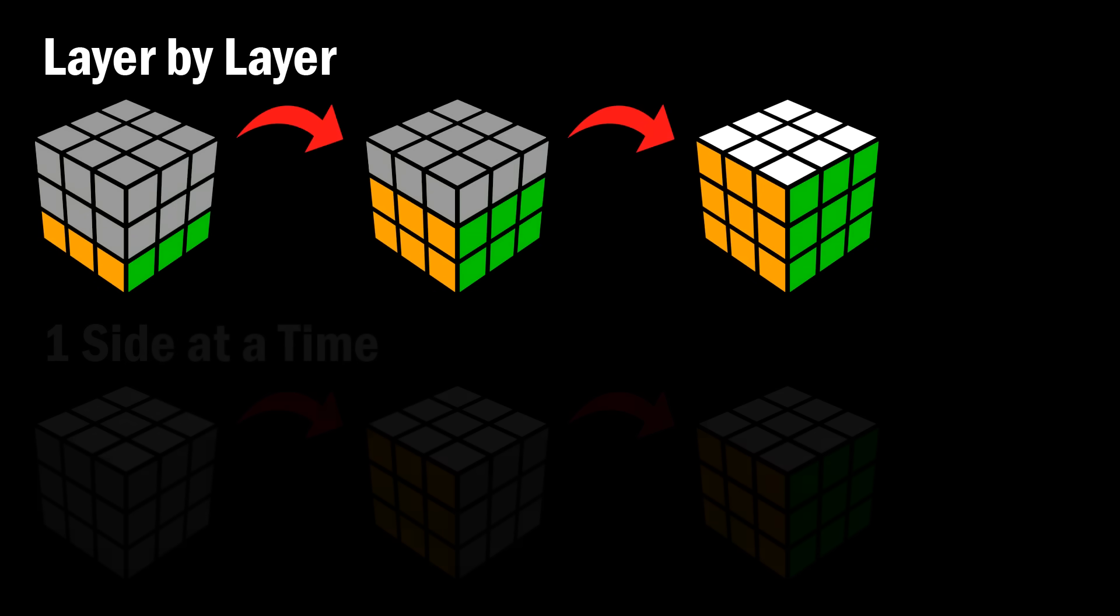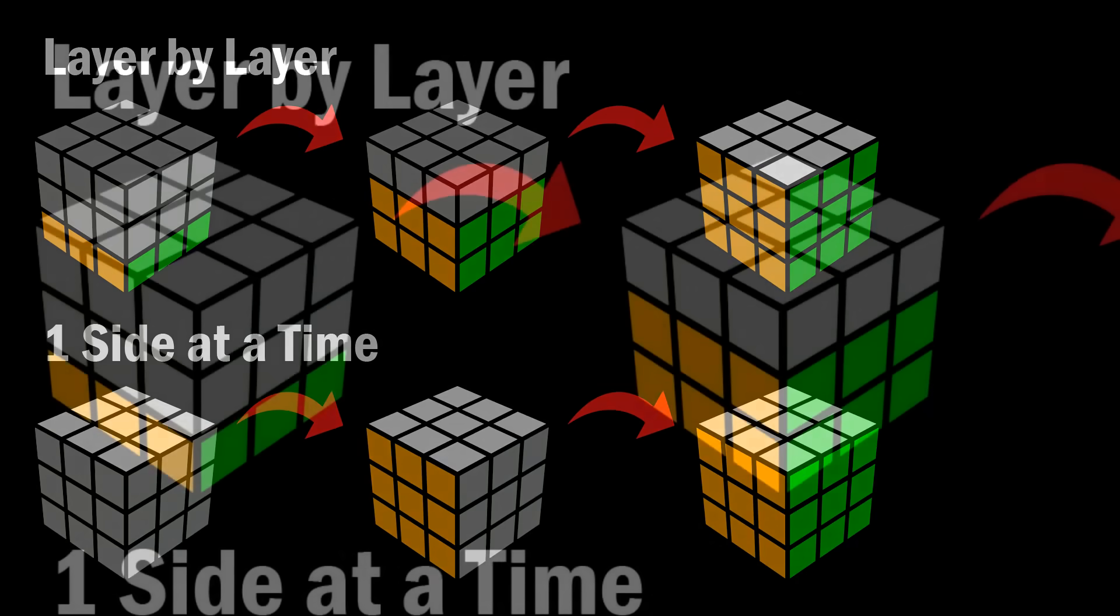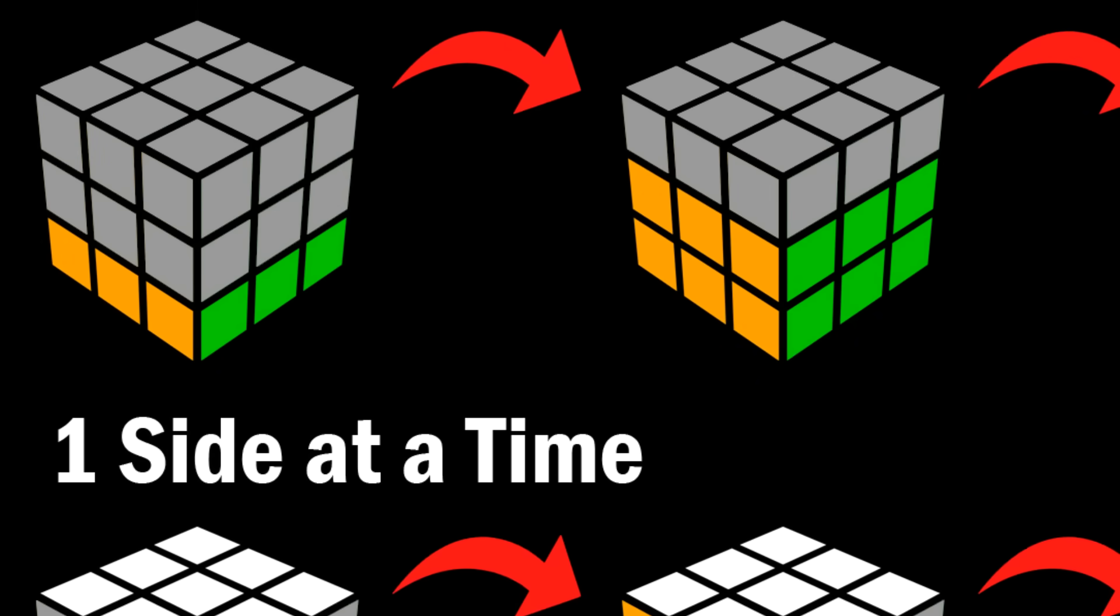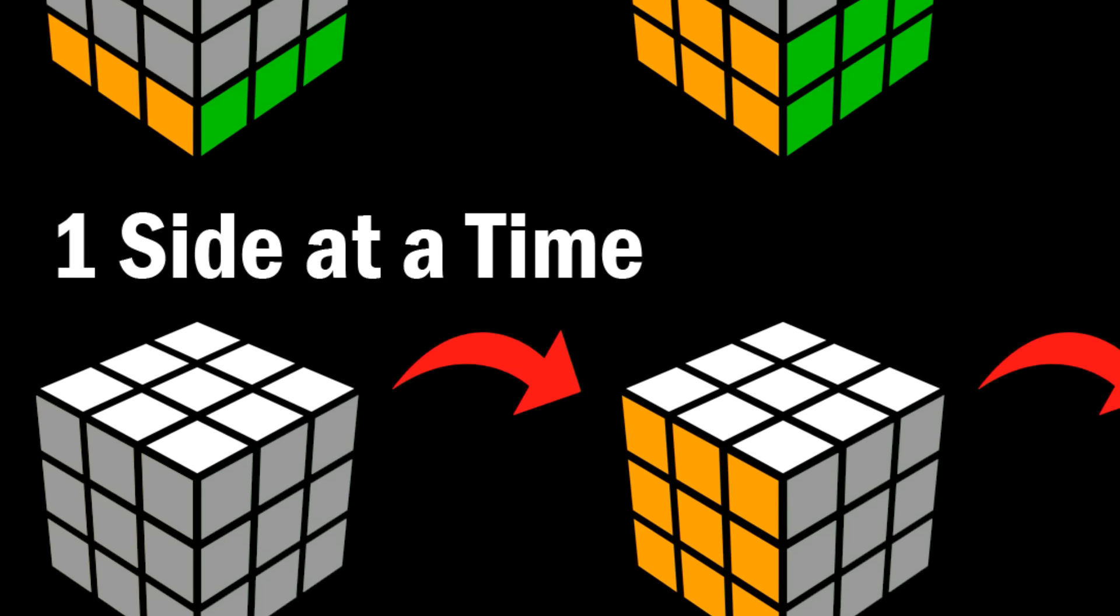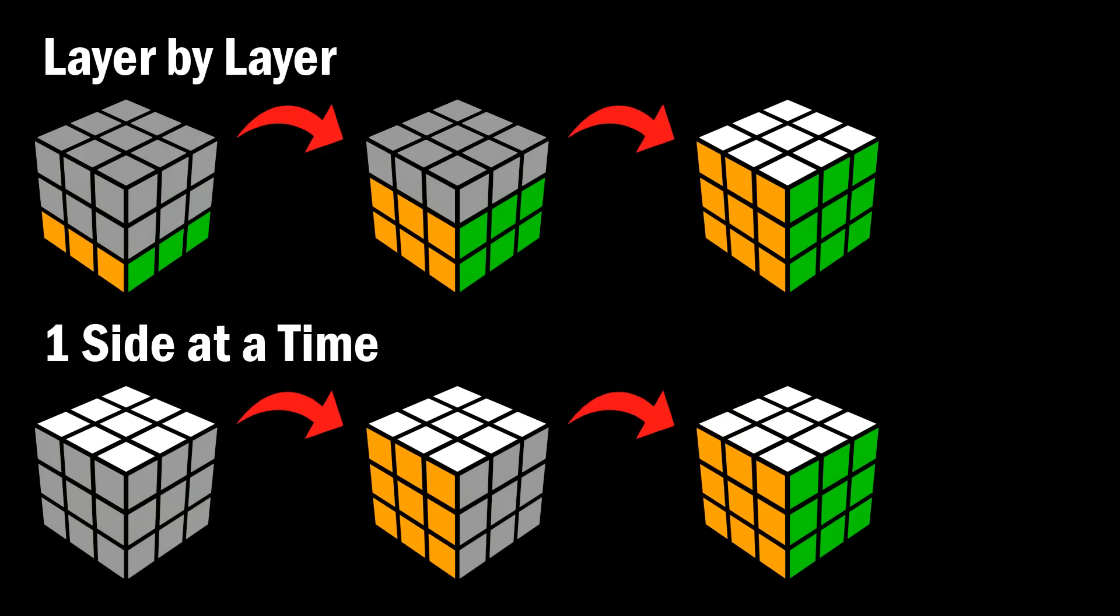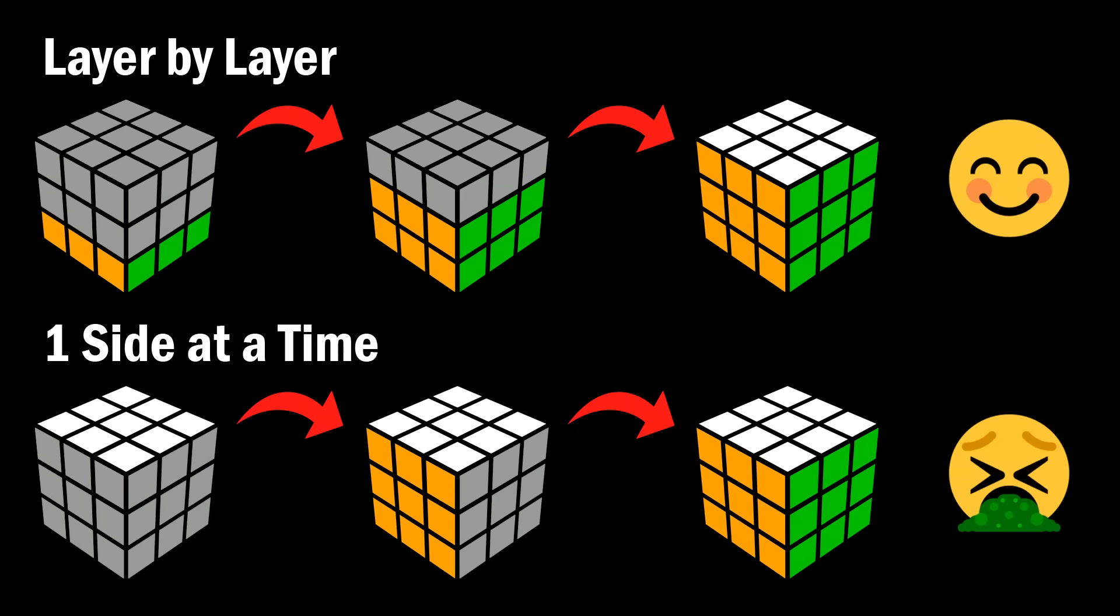For those of you new to cubing, the way we usually solve is layer by layer and not one side at a time. If you just glance at it and you're looking at the colors, then the concept looks just like two different ways you could do it, but fundamentally these two methods are very, very different.